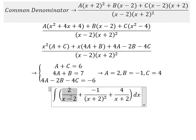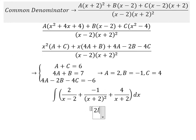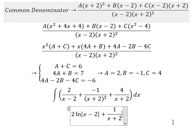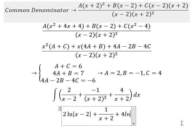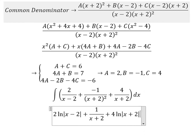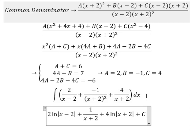The integration of this one gives us 2 times the natural log of the absolute value of (x-2), plus negative 1 over (x+2), plus 4 times the natural log of the absolute value of (x+2), plus the constant C.